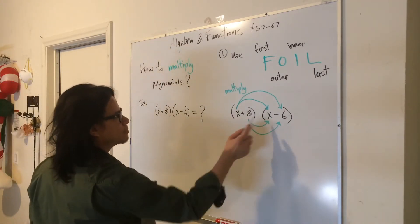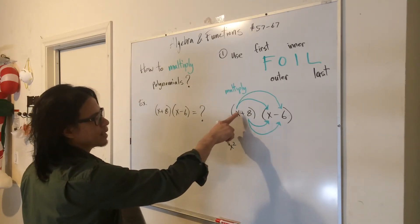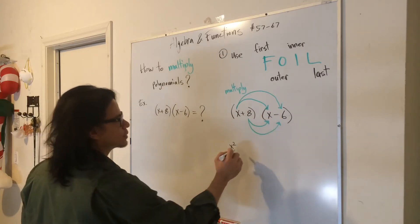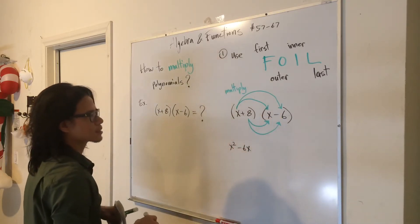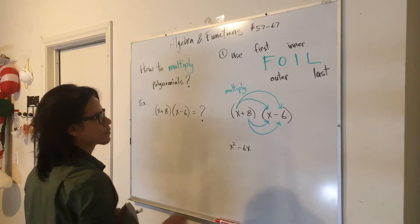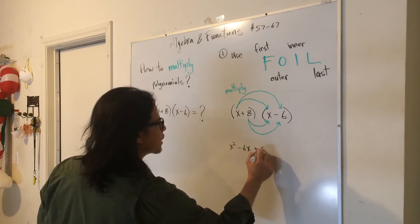x times x is x squared. x times negative 6 is negative 6x. 8 times x is 8x.